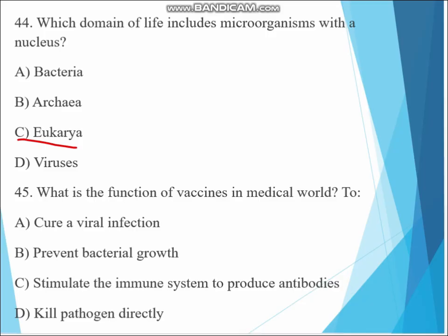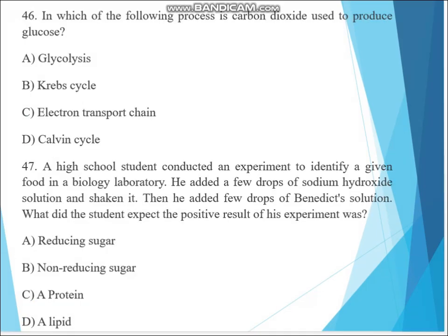Question 45. What is the function of vaccines in the medical world? A. To cure a viral infection, B. Prevent bacterial growth, C. Stimulate the immune system to produce antibodies, D. Killing pathogens directly. The answer must be C, stimulate the immune system to produce antibodies. This is the answer.